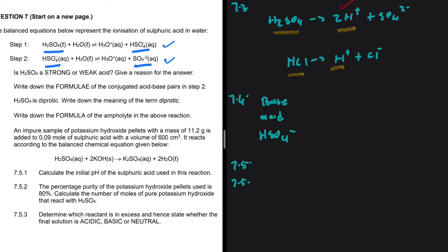Then 7.5.1, calculate the initial pH of the sulfuric acid used in this reaction. So what is the pH of the sulfuric acid used? It ionizes to form 2H plus plus SO4 2 minus, as I demonstrated below. You will see in just a few seconds why I'm doing that.